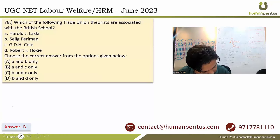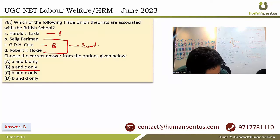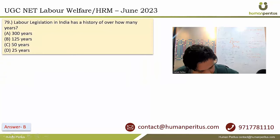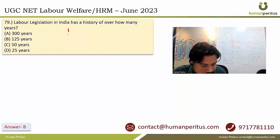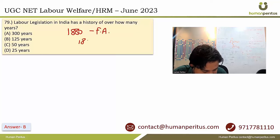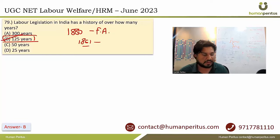These two are economists from America. Labor legislation in India has a history of over how many years? If you recall that the Factories Act first came in 1880 — although the Apprentices Act came around 1861 — then 125 years is the most appropriate answer. Option B is correct.